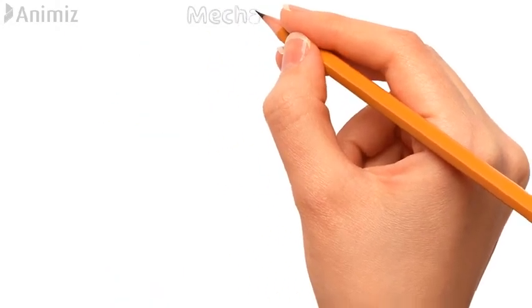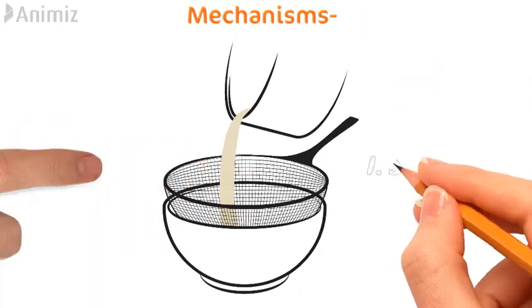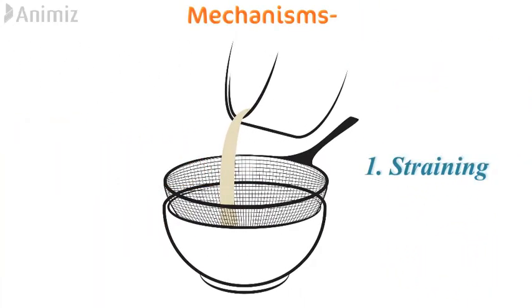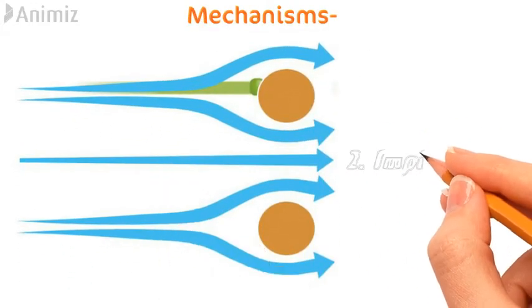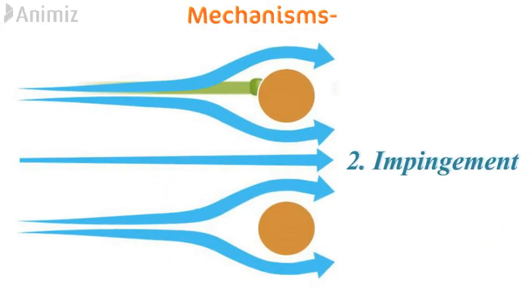Let's see various mechanisms of filtration. The first one is called straining, which is similar to sieving in that particles of larger size cannot pass through the smaller pore size of the filter medium. The second mechanism is called impingement, in which solids having high momentum move along the path of a streamlined flow and strike or impinge the filter medium.